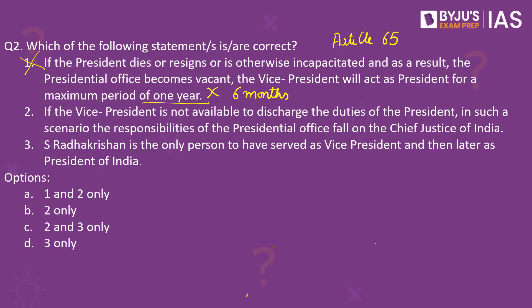Consider the second statement. This is correct — if the vice president is not available to discharge the duties of the president, the Chief Justice of India acts as president. This was observed in 1969 when the then president of India, Zakir Hussain, died suddenly. The then vice president, V.V. Giri, became the acting president. However, V.V. Giri later resigned from both offices as acting president and vice president to become a candidate in the 1969 presidential election. In such a scenario, the then Chief Justice of India, Hidayatullah, served as the president of India.